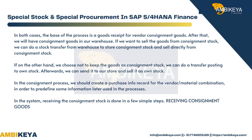In both cases, the base of the process is a goods receipt for vendor consignment goods. After that we will have consignment goods in our warehouse. If we want to sell the goods from consignment stock, we can do a stock transfer from warehouse to store consignment stock and sell directly. Alternatively, we can do a transfer posting to own stock and sell it as own stock.